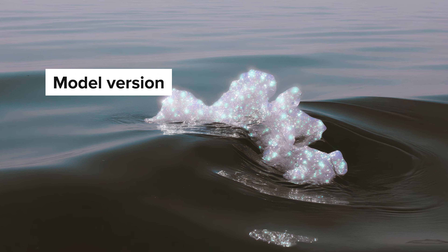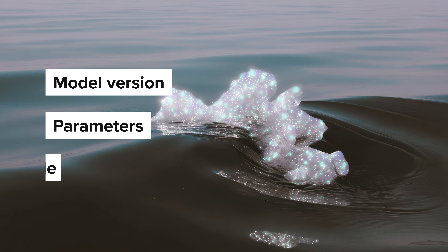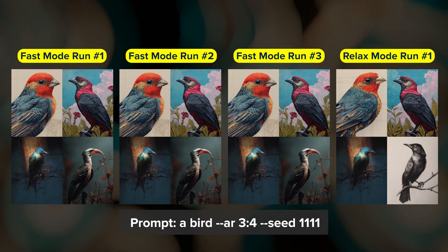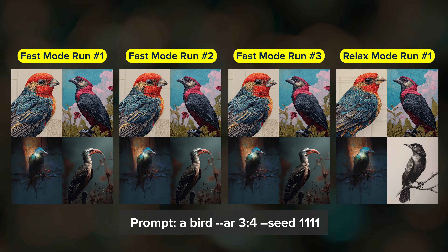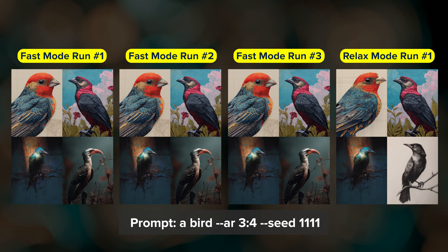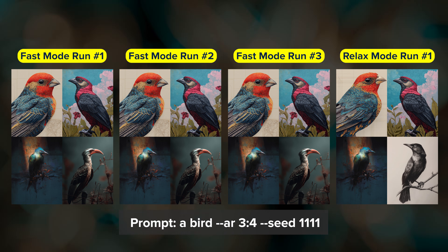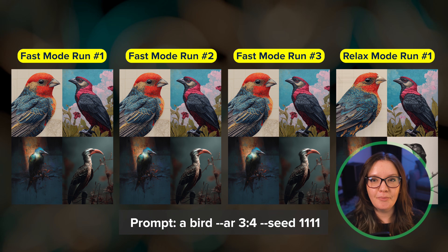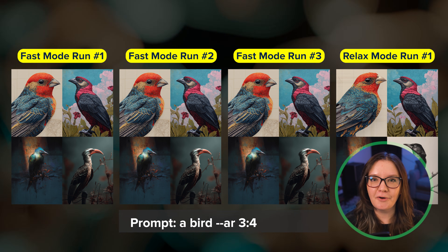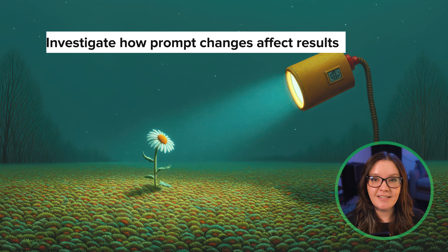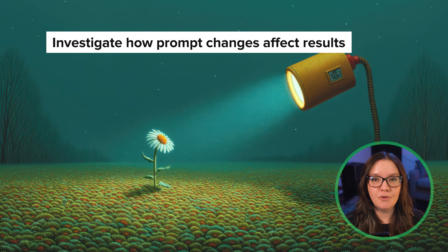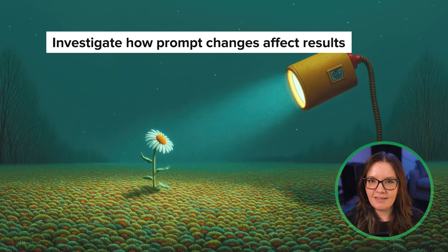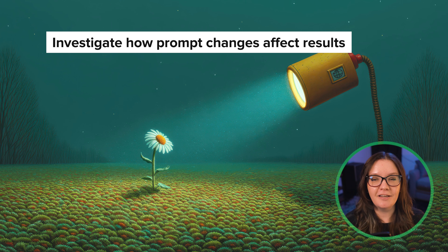Different factors like the model itself, other parameters, and sometimes the speed mode can all introduce small variations. But using a seed number gives you a predictable starting point, and the high level of consistency or repeatability in the results is what makes seed numbers so valuable. The real power though doesn't come from running the same prompt with the same seed number over and over, but when you use the seed parameter to investigate how specific changes to other parameters and prompt text affect your results. For this reason, I consider seed to be more of an advanced parameter.